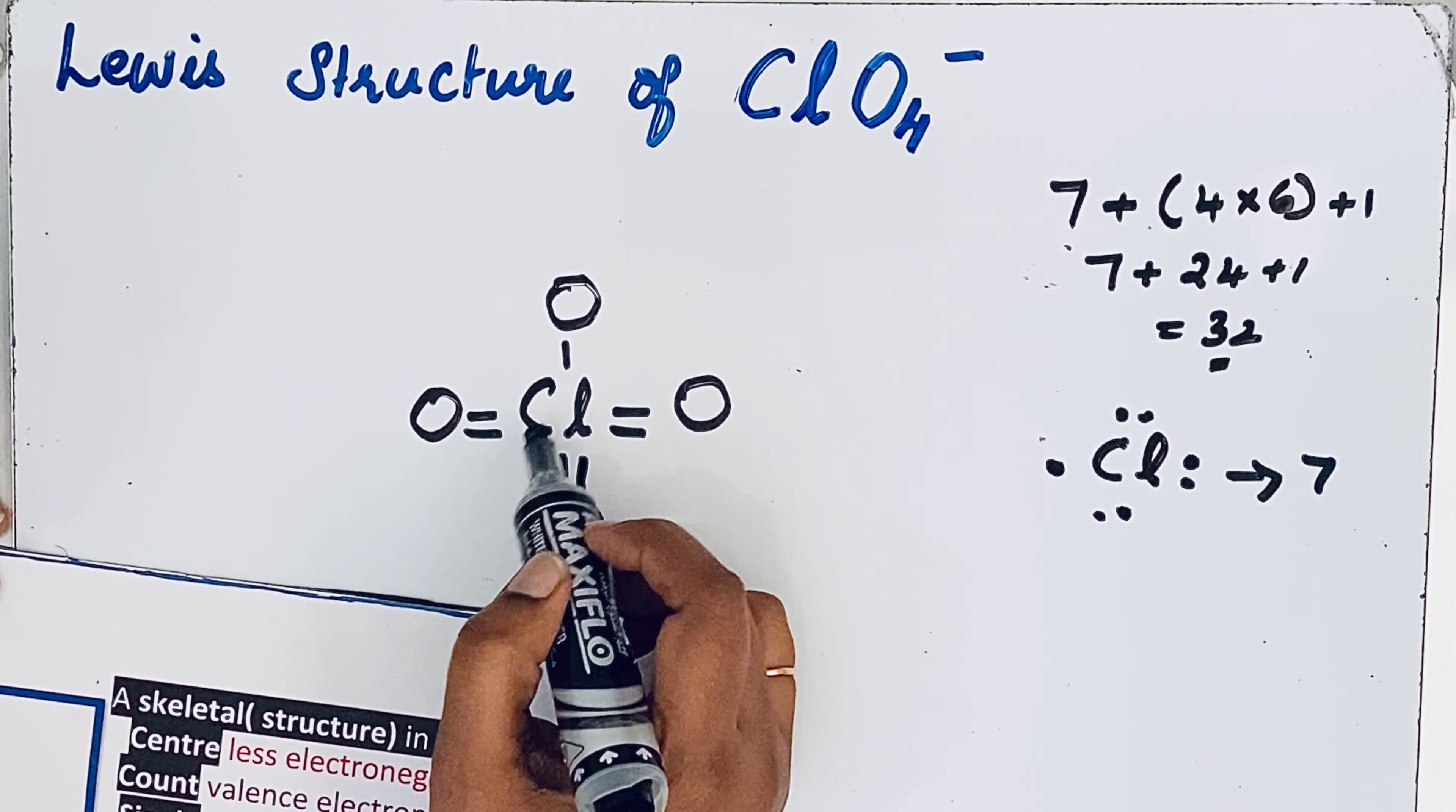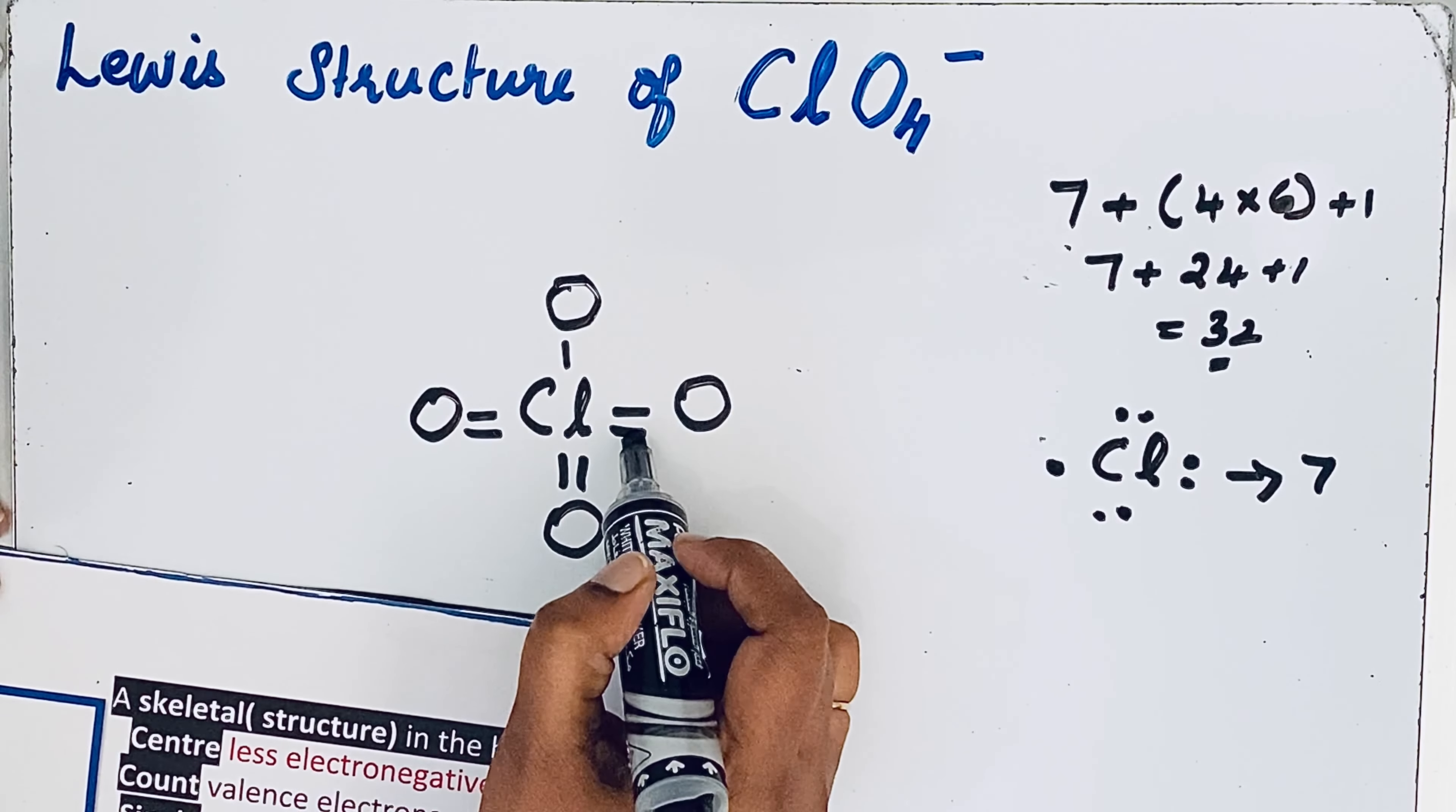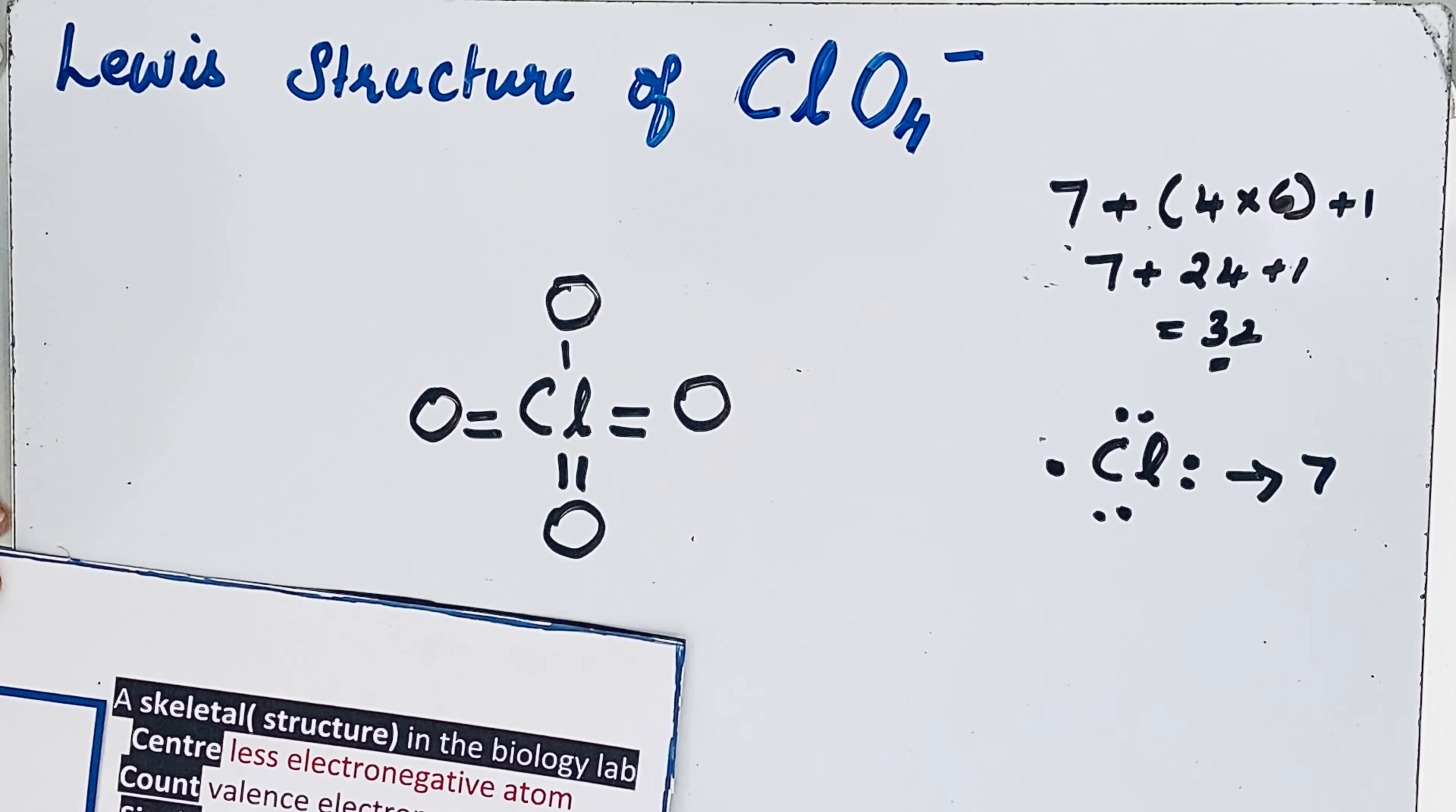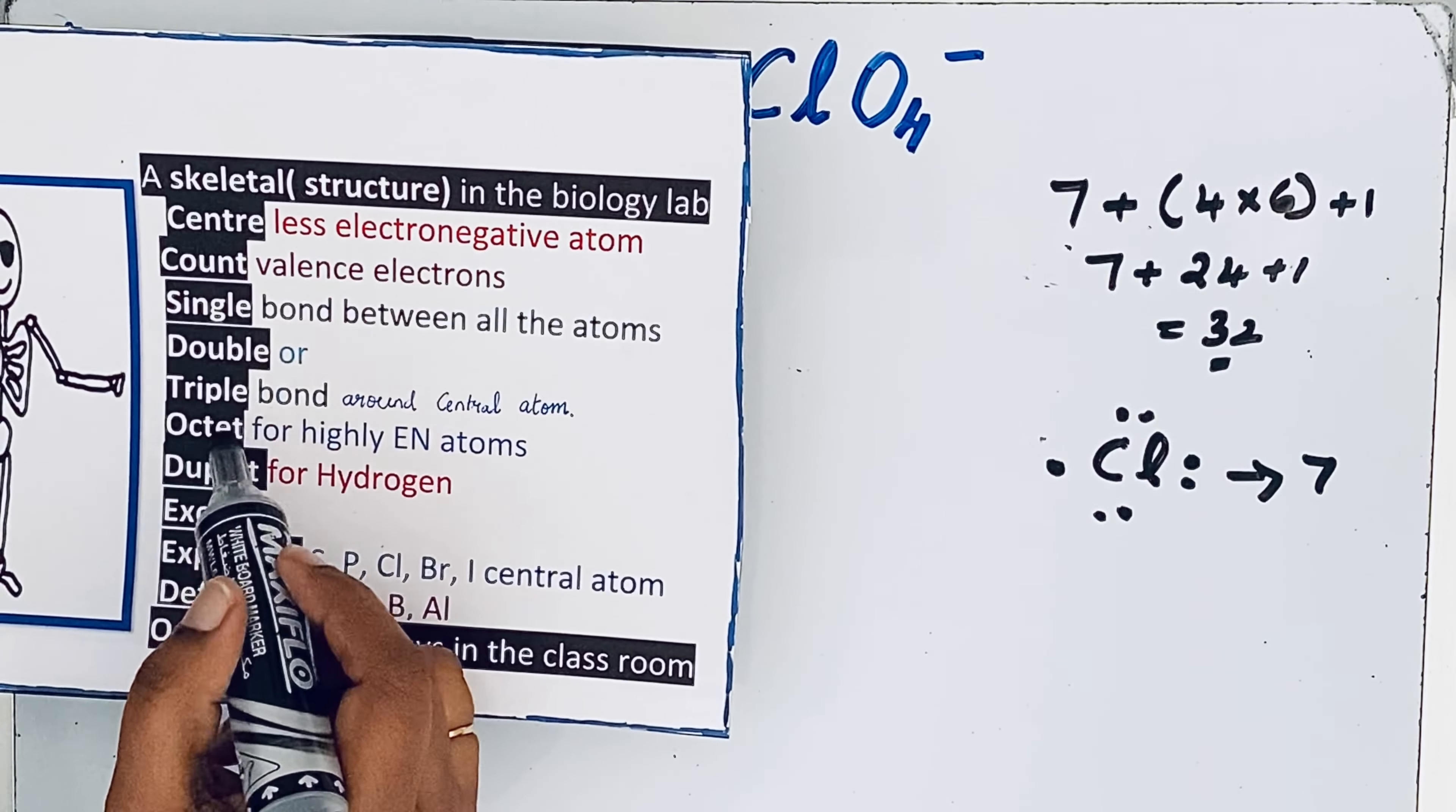So let us check for chlorine whether the octet configuration is completed. Two, four, six, eight, ten, twelve, fourteen. So chlorine can get more electrons.